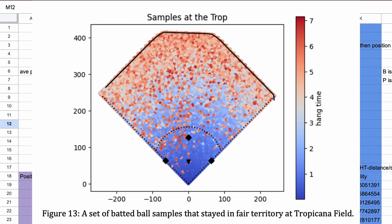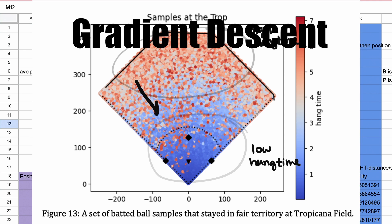Even though my data is fake, something similar happens with real hits. The ball position is not independent of hang time, and moving away from high hang time balls to be closer to low hang time balls maximizes the probability of getting an out.